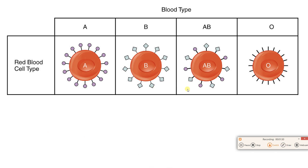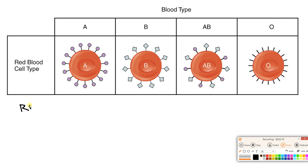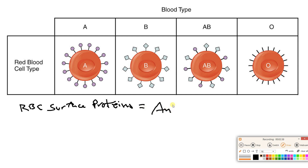So let's talk about blood typing — the letter first, symbol second. I've got here four different red blood cells. Red blood cells are our most abundant formed element, most abundant cell in the body. They have no nucleus, that biconcave disc shape, and they're stuffed with hemoglobin for oxygen transport. But for our purposes today, what's really important is that red blood cells have proteins on their surface, and these surface proteins are referred to as antigens.